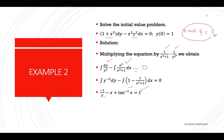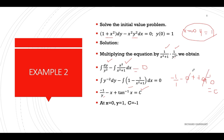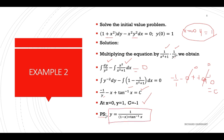Substituting the initial conditions x equals 0 and y equals 1: we get negative 1 over 1 minus 0 plus arctan(0), which equals 0. So c must equal negative 1. Substituting c equals negative 1 into the general equation and solving for y in terms of x gives the particular solution.